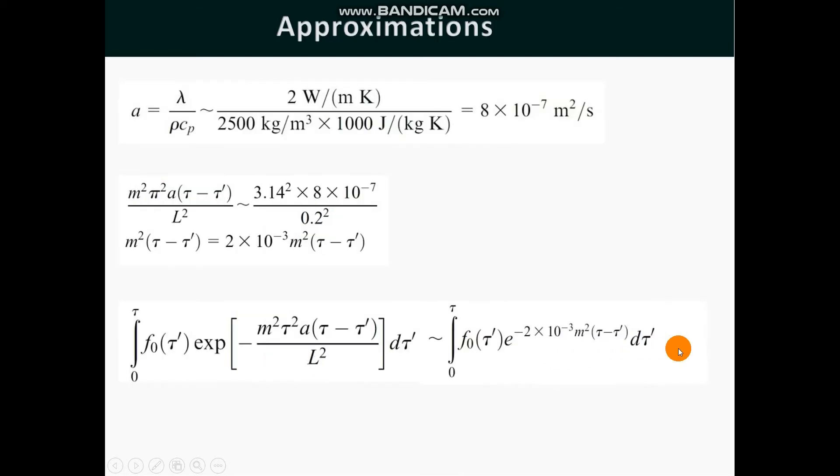Now putting these expressions for G we have found using Fourier series and using approximations like α = λ/ρcp which is almost equal to 8×10⁻⁷ meter square per second.